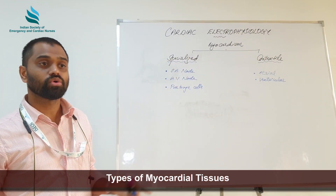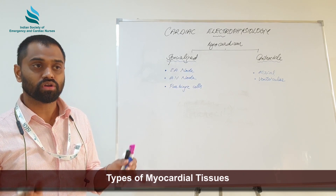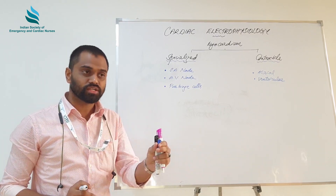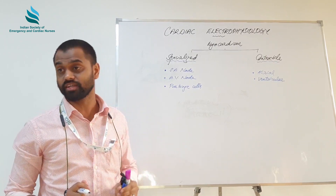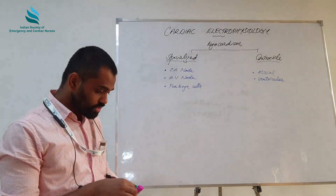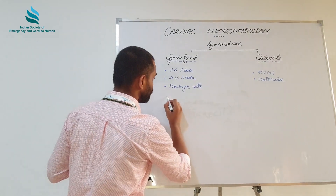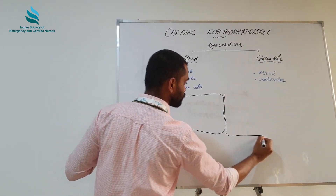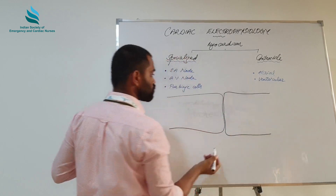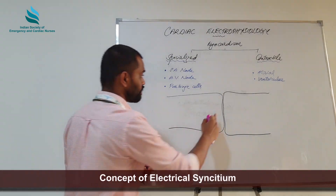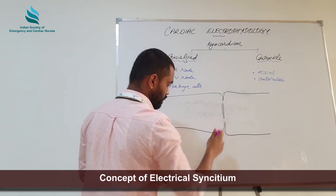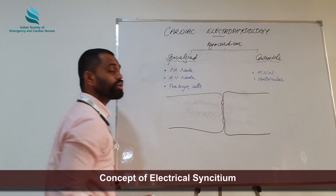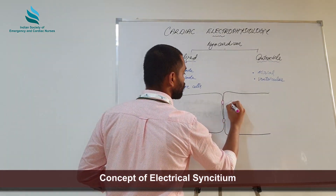Now there is another very significant property of myocardial cells. Let's suppose this is a myocardial cell, and here we have an adjacent myocardial cell. At their junctions, we have some fluid-filled spaces, and these fluid-filled spaces are called gap junctions.